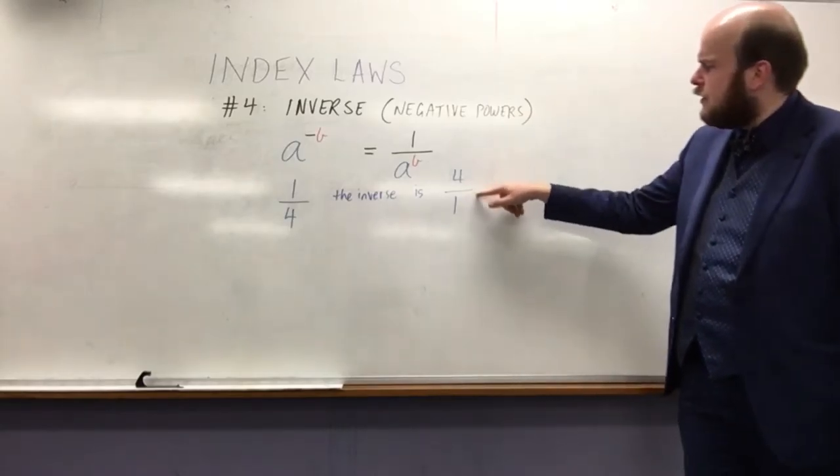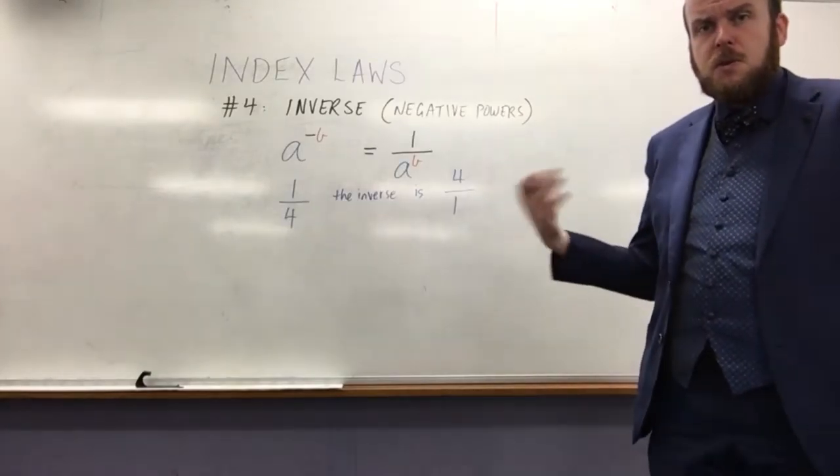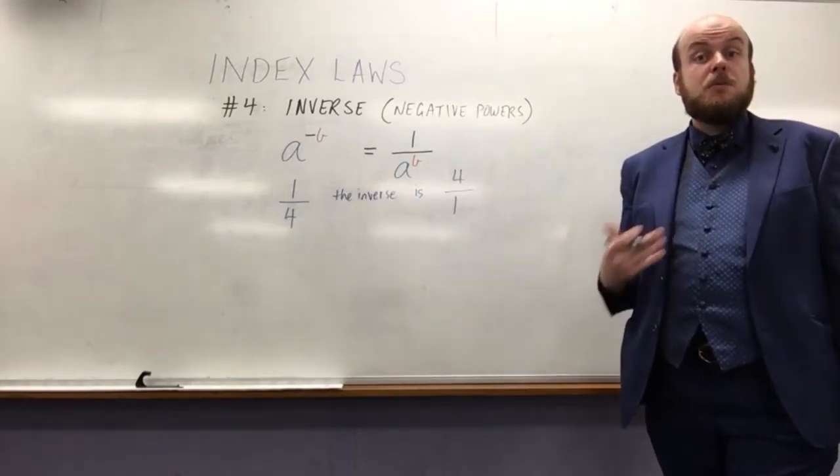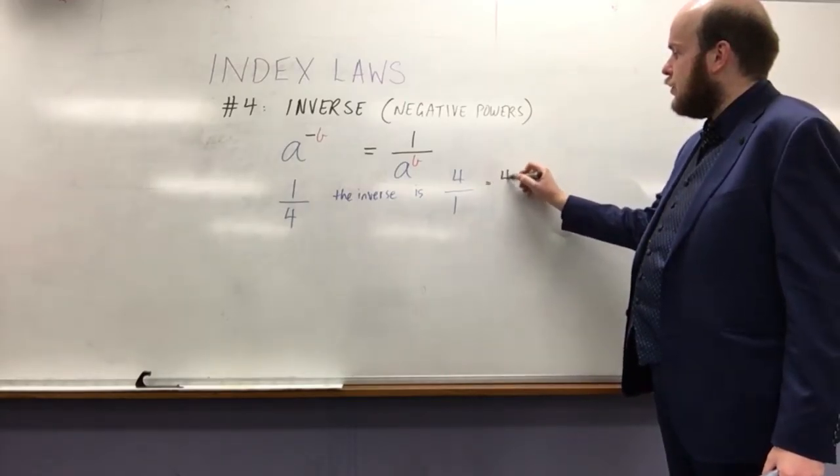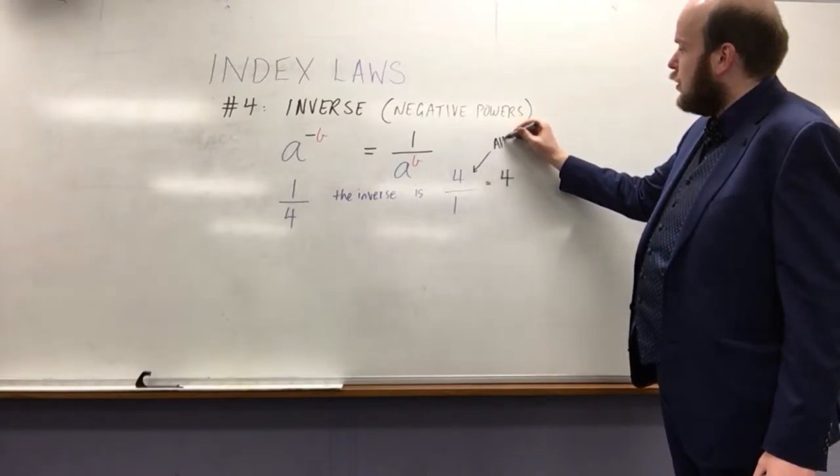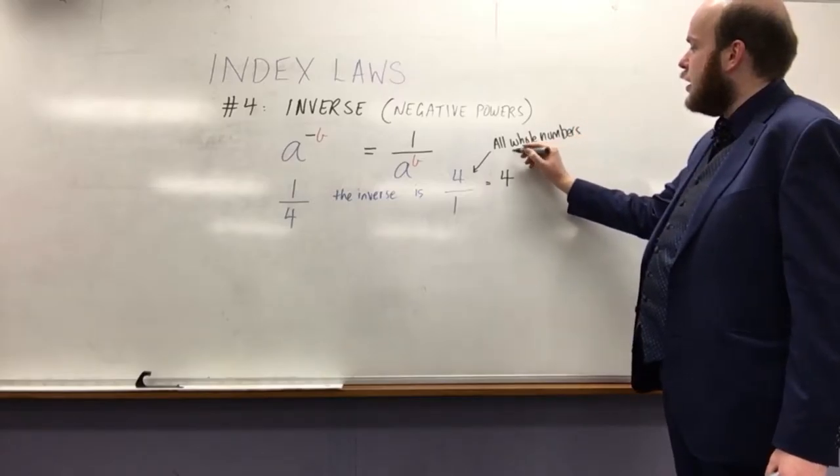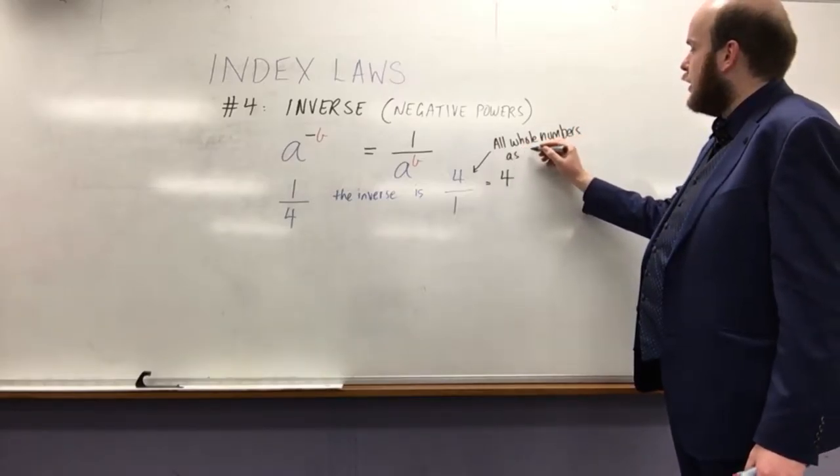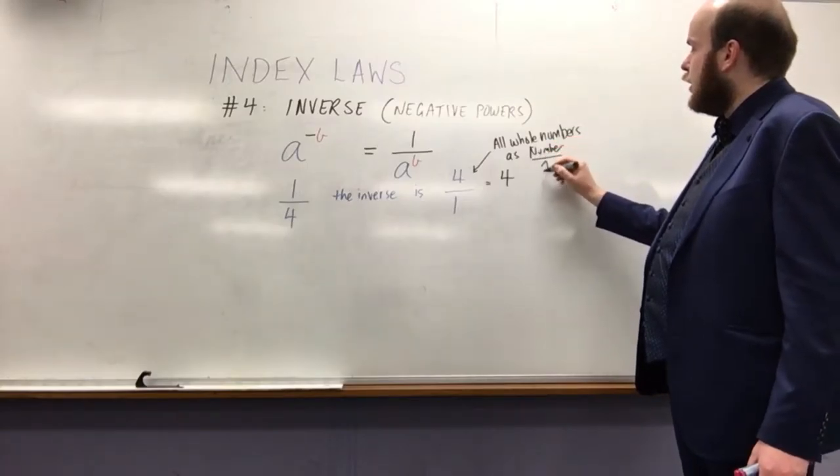Interestingly, notice how I've got here 4 over 1. Well, hopefully, if you'll remember, that 4 over 1 is just another way of writing as a whole number, because 4 divided by 1 is equal to 4. So, all whole numbers can be written as that number over 1.